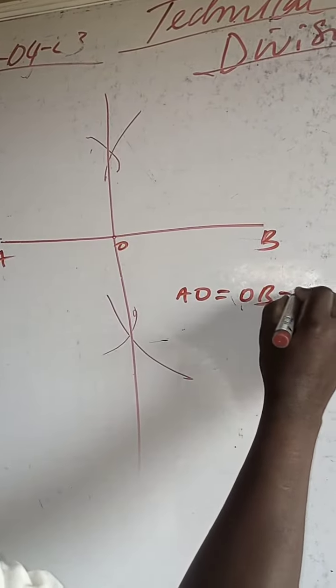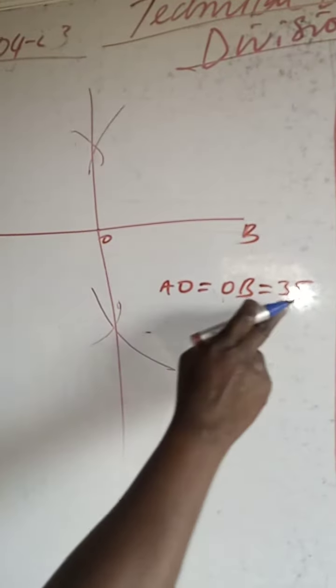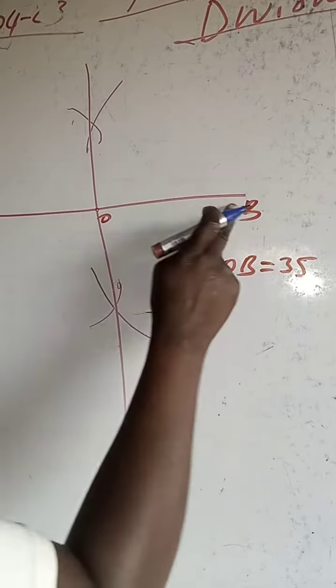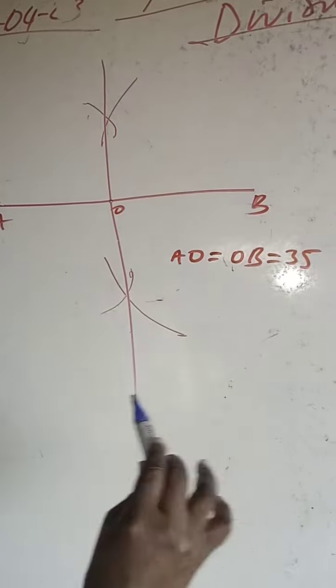That will be equal to 35 because the line is 70. When you divide it into two, it should give you 35. Measure this place and confirm if it is 35. If it is not 35, that means you have not done it correctly.